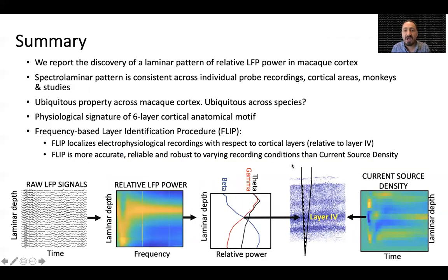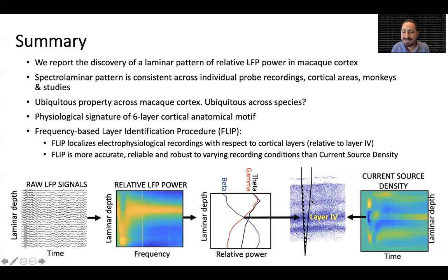In summary, we report the discovery of a laminar pattern of relative LFP power in the macaque cortex consisting of higher gamma and theta relative power in superficial layers and higher alpha-beta relative power in deep layers. This spectral laminar motif is highly consistent across individual probe recordings, a variety of cortical areas, individual monkeys, and studies from different labs. This suggests the motif is a ubiquitous property across all macaque cortex and represents a physiological signature of the well-known six-layer cortical anatomical motif. Whether the motif is ubiquitous across species remains to be determined. We introduced a frequency-based layer identification procedure, or FLIP, to locate electrophysiological recordings with respect to cortical layers based on the spectral laminar pattern.